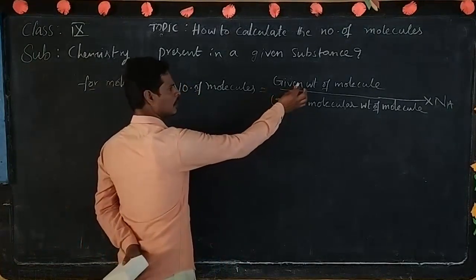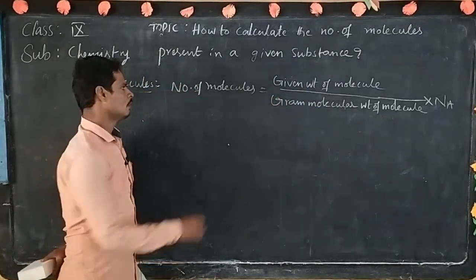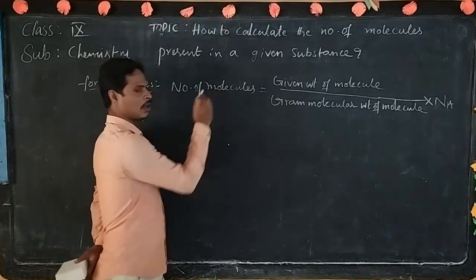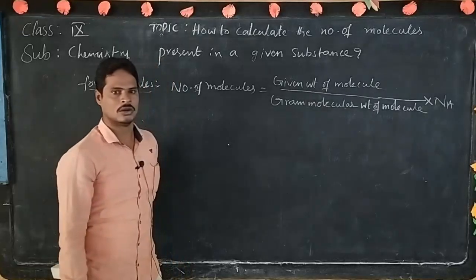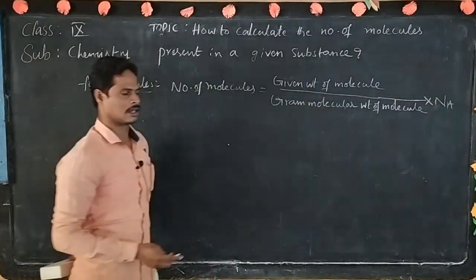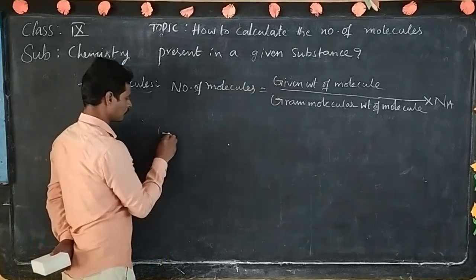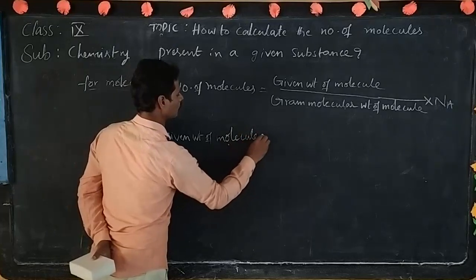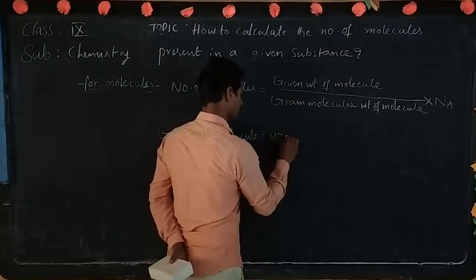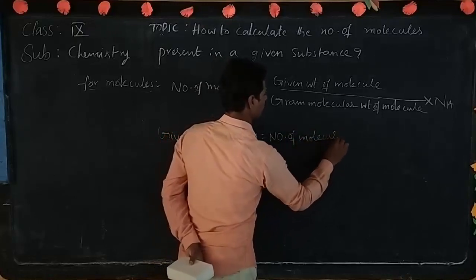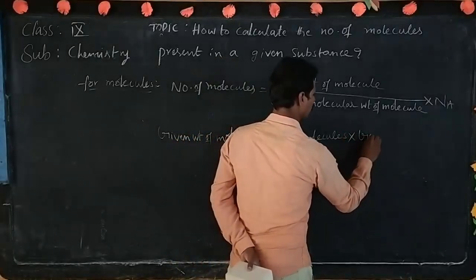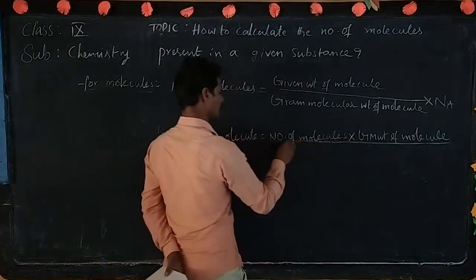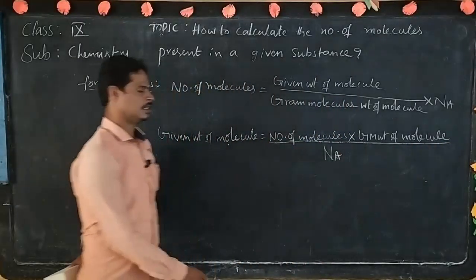Here, we know the given weight of molecule and gram molecular weight of molecule, so we can apply this formula. For the second formula, if we know the number of molecules as well as gram molecular weight of molecule, and we need to calculate the given weight of molecule, the formula changes: given weight of molecule equal to number of molecules into gram molecular weight of molecule, divided by Avogadro number. This is the second formula.